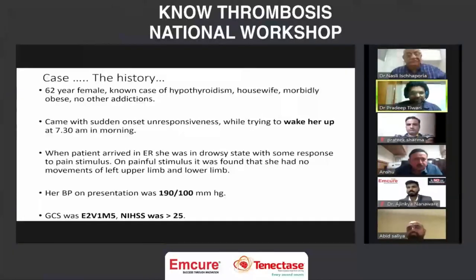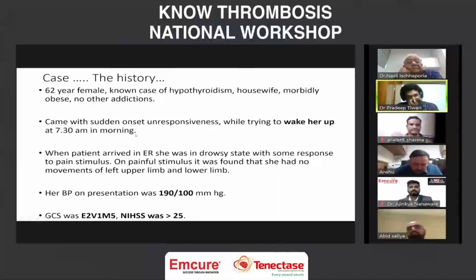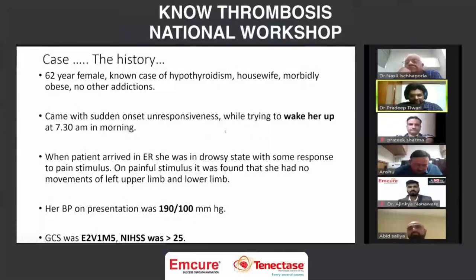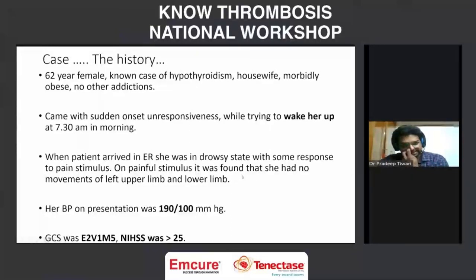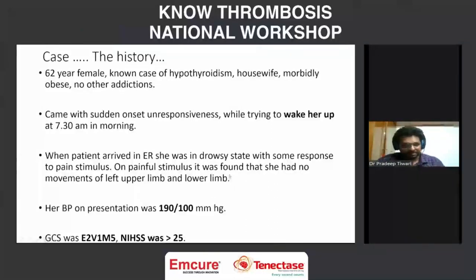We have a 62-year-old female. She's a known case of hypothyroidism, on L-Thyroxine 75. She's a housewife, morbidly obese, with no known addictions. She came with sudden onset unresponsiveness when attendants tried to wake her around 7:30 a.m. The patient arrived in the emergency room in a drowsy state with some response to painful stimulus, and it was found she had no movement of her left upper and left lower limb.